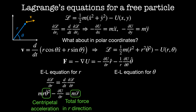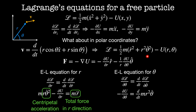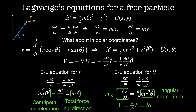The Euler-Lagrange equation for theta states that dL by dθ equals d by dt of dL by dθ dot. This gives minus dU by dθ on the left, which equals r times the force in the theta direction — this is the definition of torque. On the right, we have d by dt of mr squared theta dot, which is angular momentum. So just from the Euler-Lagrange equations, we've derived that torque equals the rate of change of angular momentum, which equals the moment of inertia I times the angular acceleration alpha.